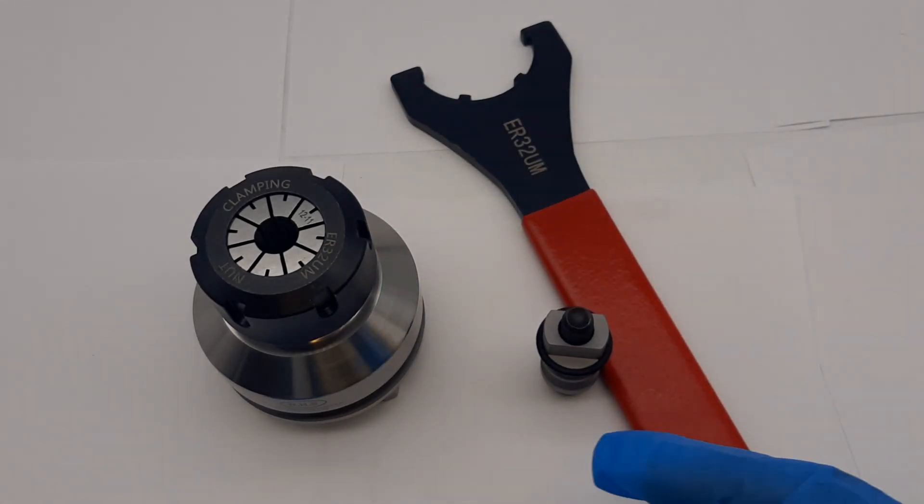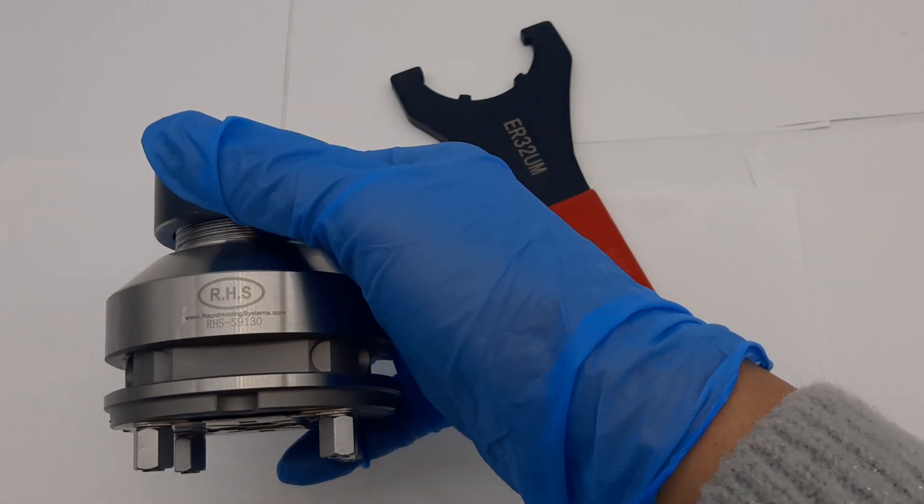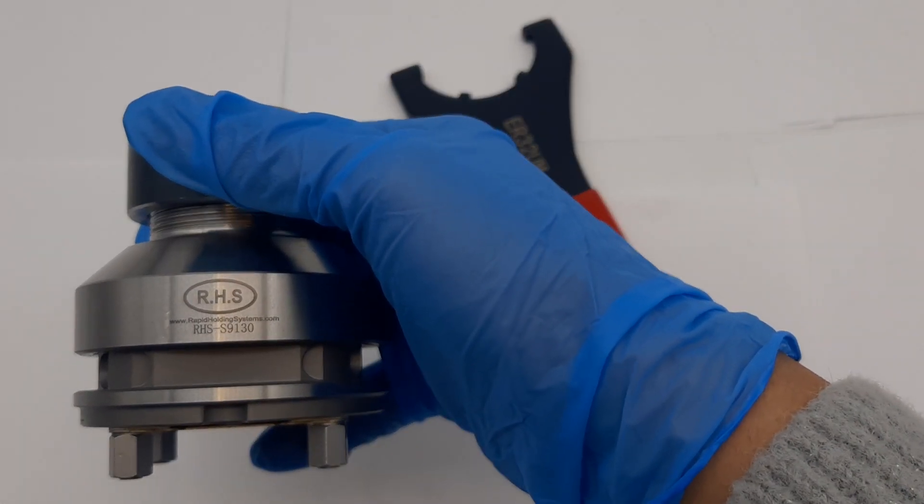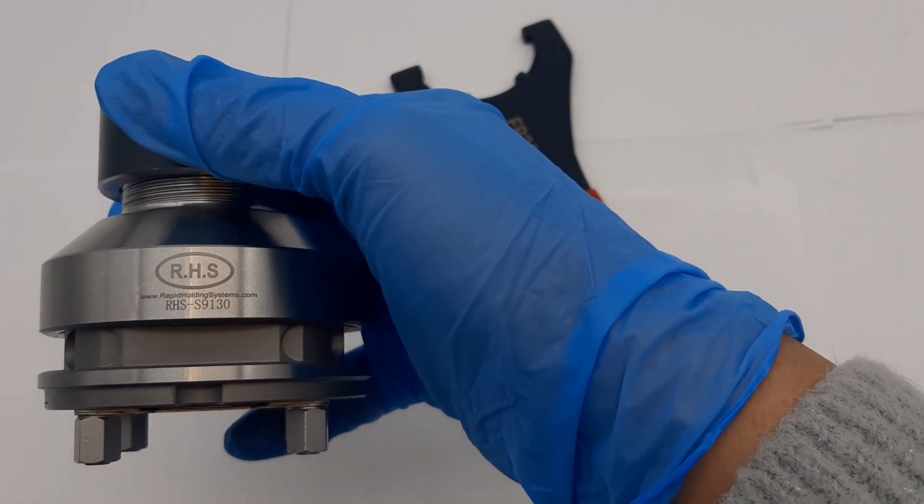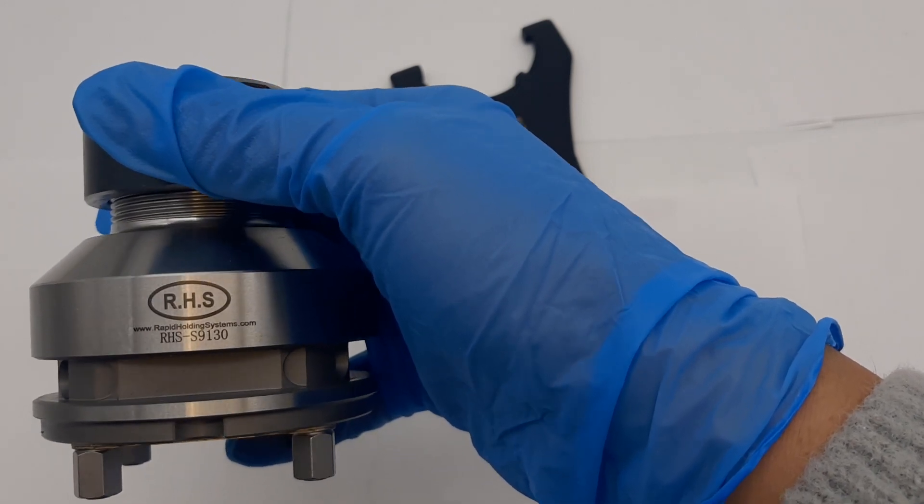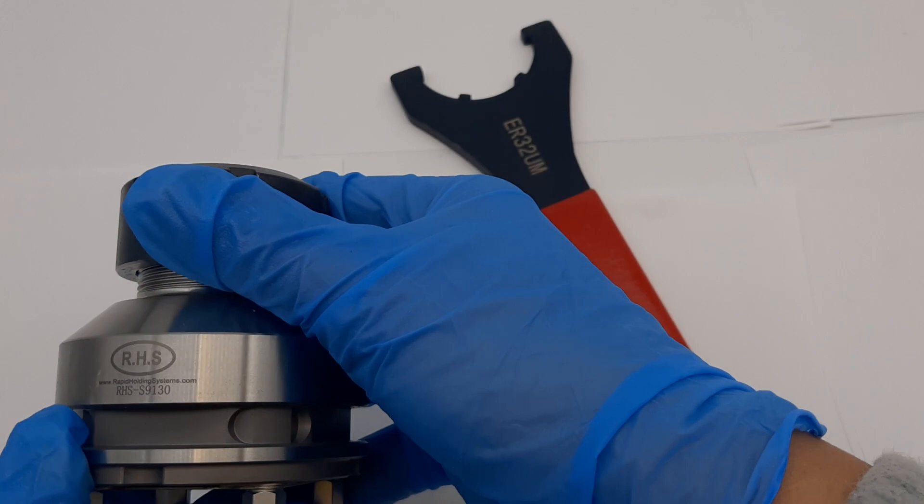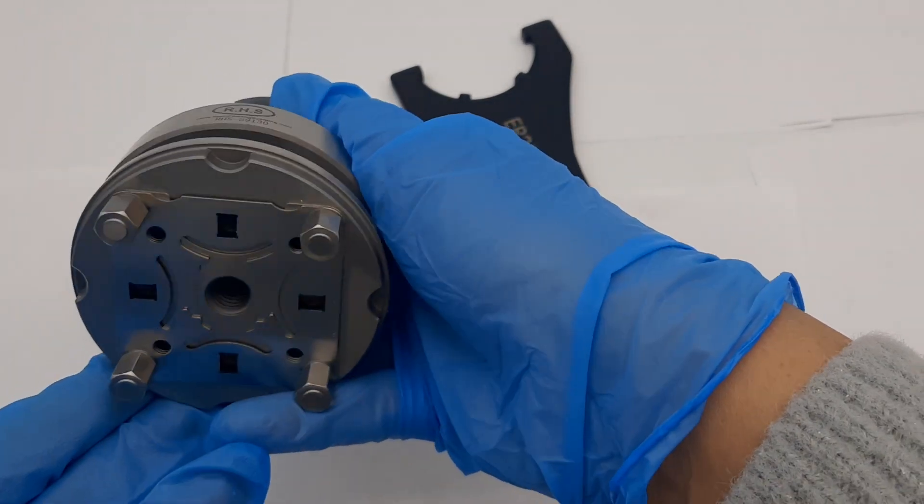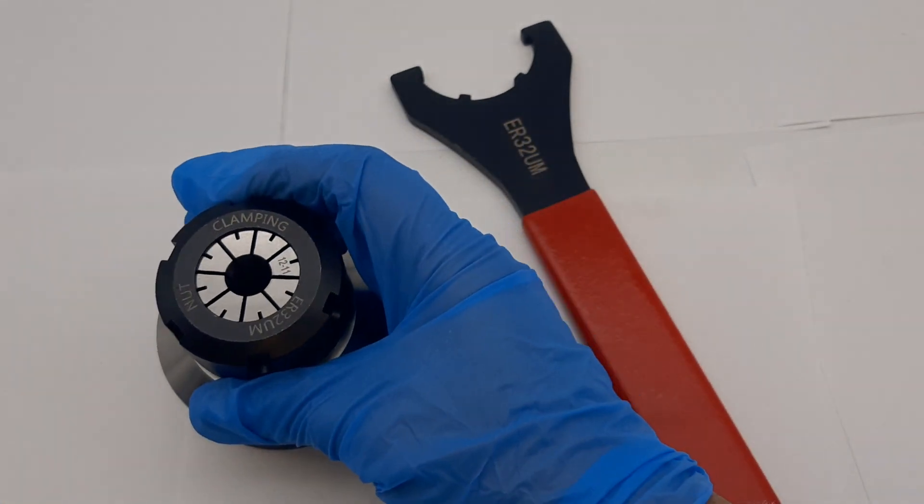This listing is available on our website rapidholdingsystems.com. Search out the part number RHS-S9130 for the detailed specifications of the part. If you have any questions, feel free to reach us today. Thanks!